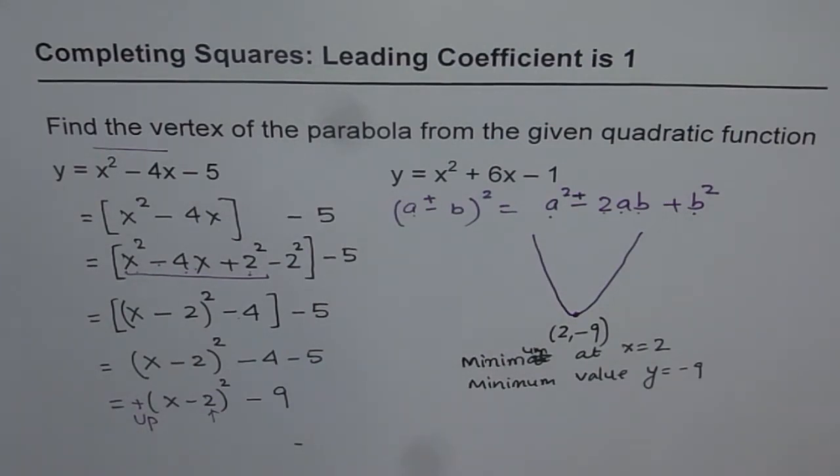Now, the next example we'll take with leading coefficient not equal to 1. And there you will feel the need for the square brackets, which is kind of redundant in this particular case. I hope you understand the process. And by the end of four examples, we'll be absolutely clear. Thank you and all the best.